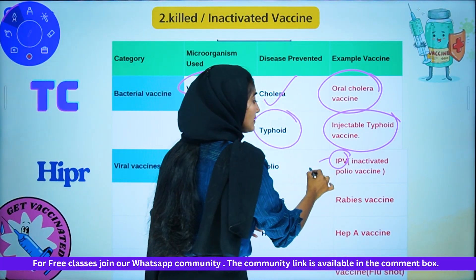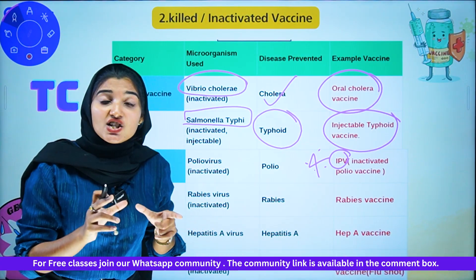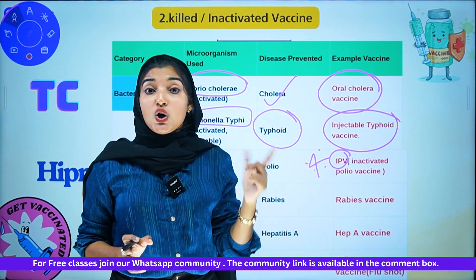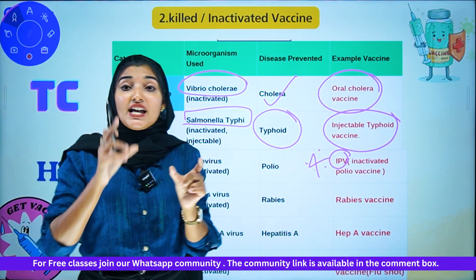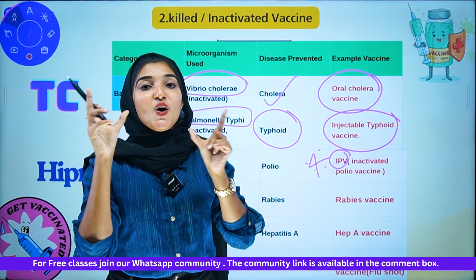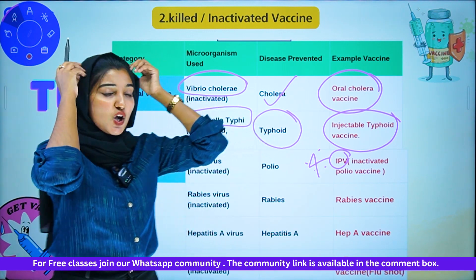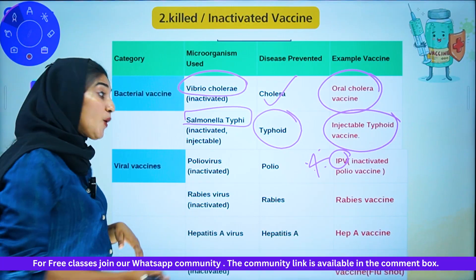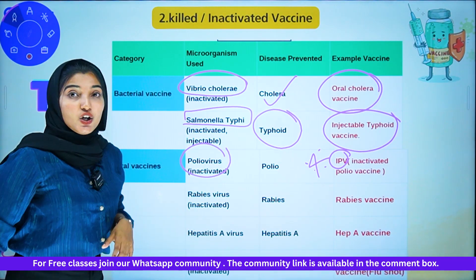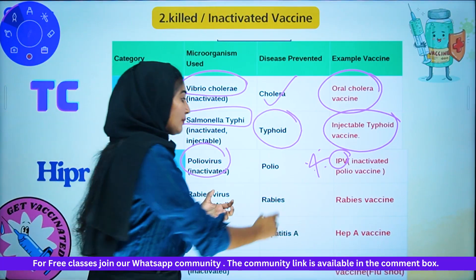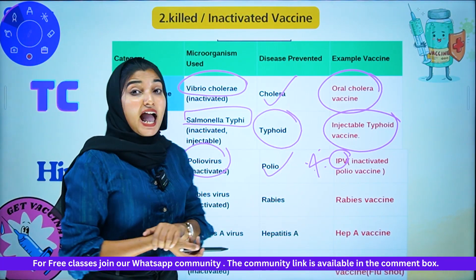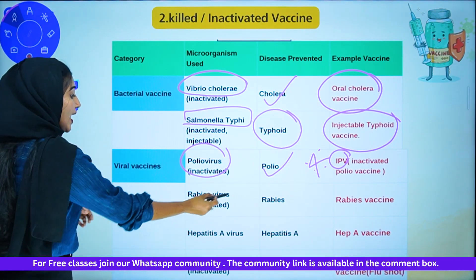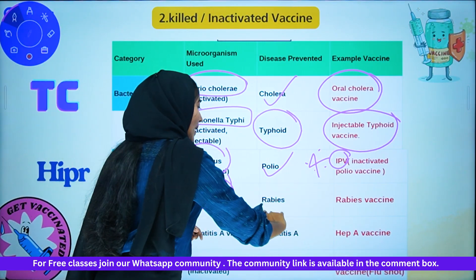IPV is important. IPV stands for Inactivated Polio Vaccine. While oral polio vaccine is a live attenuated vaccine, the injectable polio vaccine is the inactivated or killed vaccine. IPV uses the poliovirus and is given for polio disease. Next, rabies vaccine — this is also a killed/inactivated vaccine using the rabies virus for rabies disease.